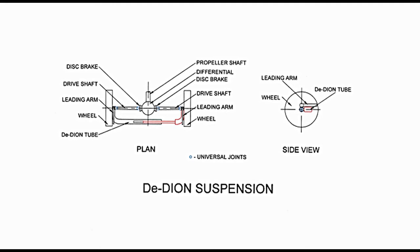As mentioned earlier, the differential and two half shafts are connected to the wheel through universal joints shown as circles in blue color. These are not enclosed in an axle casing. Universal joints provide flexibility, which is essential as wheels take different positions. Motion is transferred from the propeller shaft to the two wheels in the usual manner. The two wheels are connected to each other through the De Dion tube, which itself is in two pieces. One piece on the right side shown in red can slide inside the other shown in black.